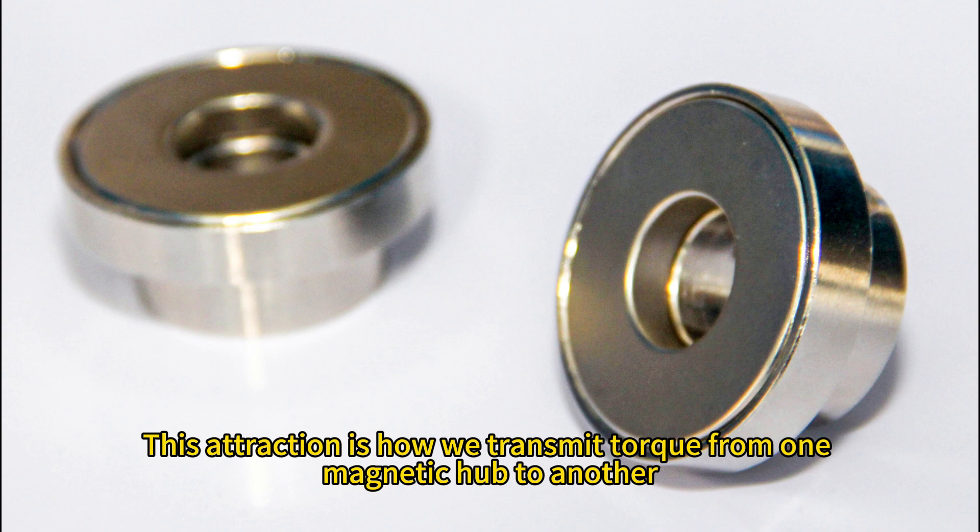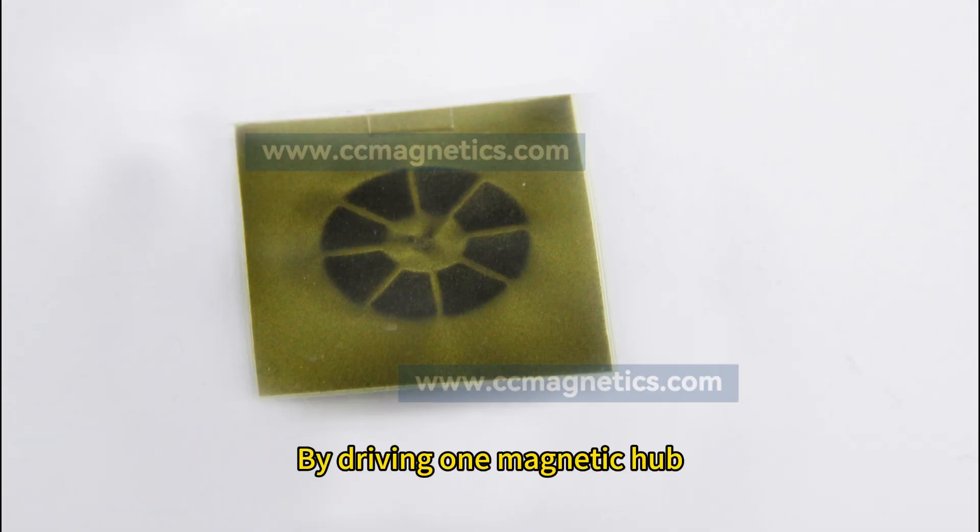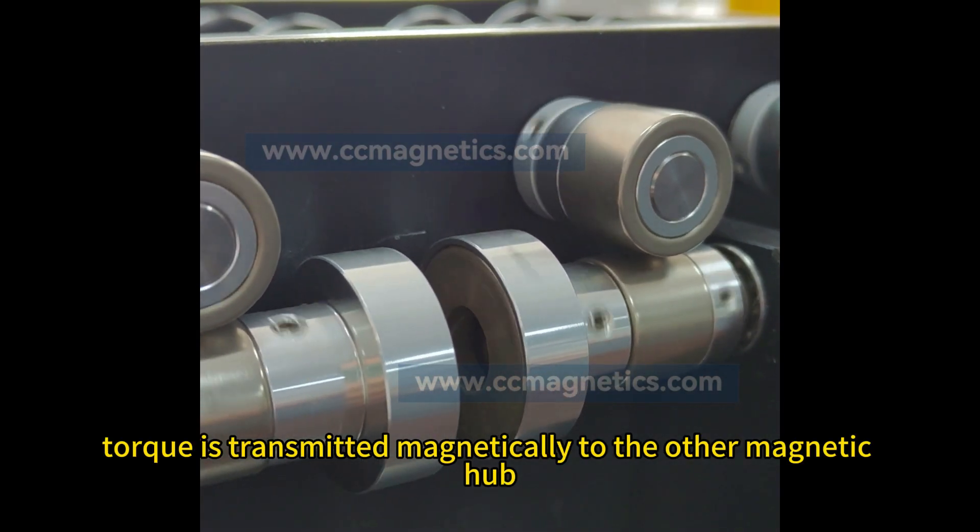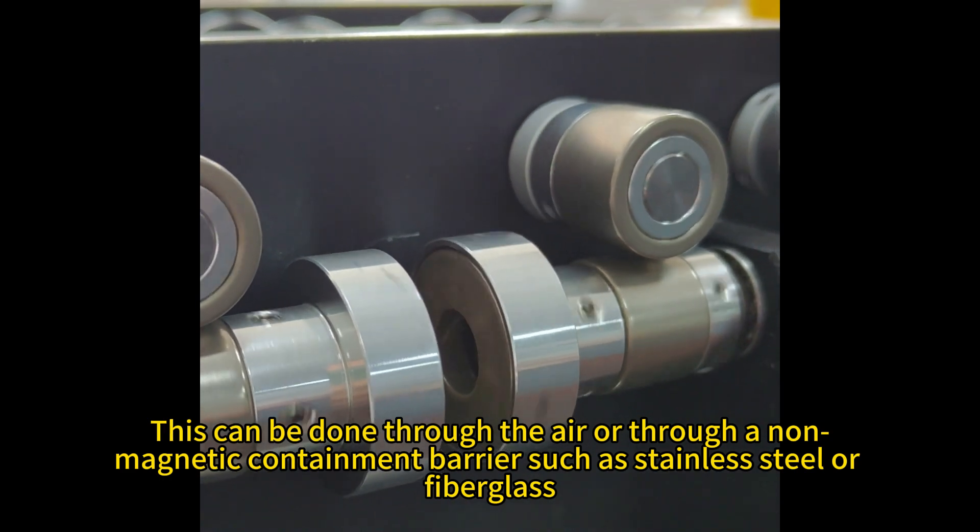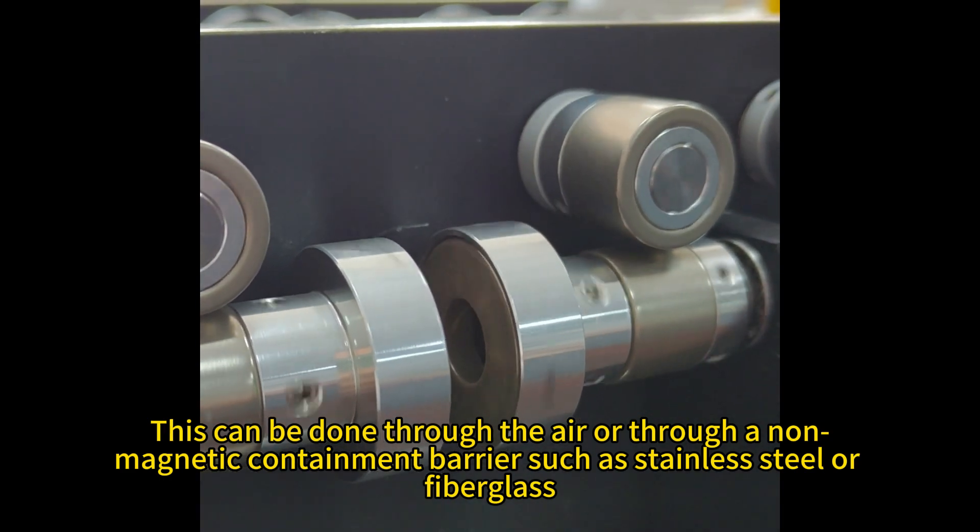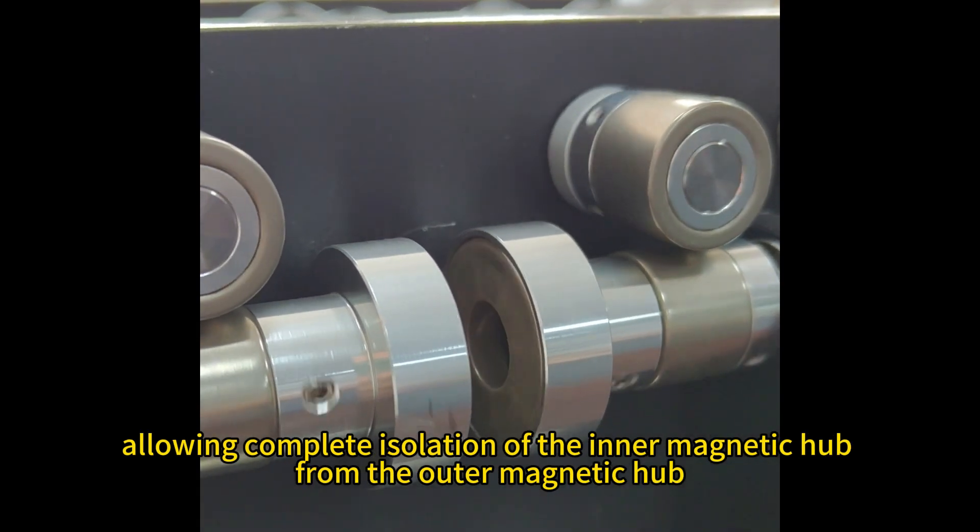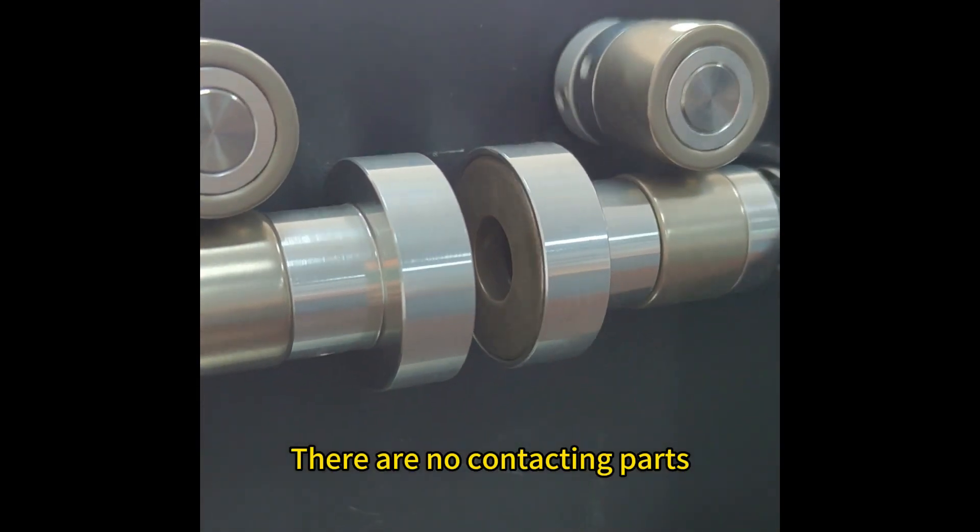This attraction is how we transmit torque from one magnetic hub to another. By driving one magnetic hub, torque is transmitted magnetically to the other magnetic hub. This can be done through the air or through a non-magnetic containment barrier such as stainless steel or fiberglass, allowing complete isolation of the inner magnetic hub from the outer magnetic hub. There are no contacting parts.